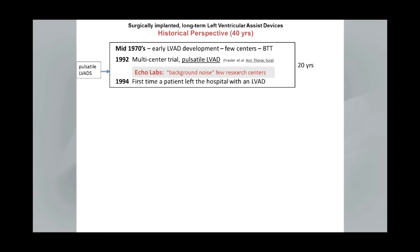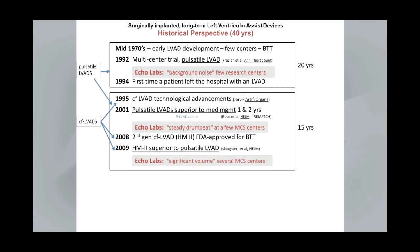Mechanical circulatory support has been under active development for 40 years, and there seem to be three eras when it comes to surgically implanted devices for circulatory support. This first era lasted for 20 years, beginning in the mid-1970s, with the first-generation pulsatile LVADs being reported in clinical trials not until the early 1990s. I punctuate this era with 1994, which is when the first patient actually left the hospital with a first-generation LVAD. From an echo perspective at that time, mechanical circulatory support really was just background noise, but not a real part of clinical operations except at a few centers.